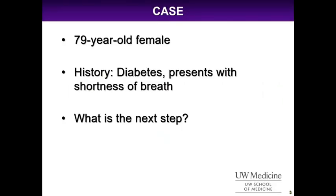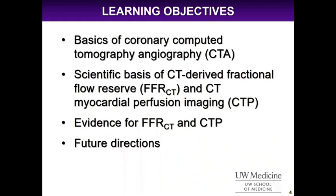Let's start off with a case. We have a 79-year-old female with a history of diabetes who presents with chest pain. This patient is at moderate risk for CAD, and oftentimes we send this patient for exercise ECG, stress echo, or nuclear stress test, but there is a fourth option: coronary CTA. I'll touch on the scientific basis of CT-derived fractional flow reserve or FFR CT and CT myocardial perfusion imaging, and I'll provide some evidence for these modalities and talk about future directions.